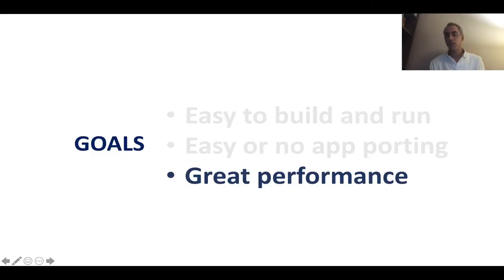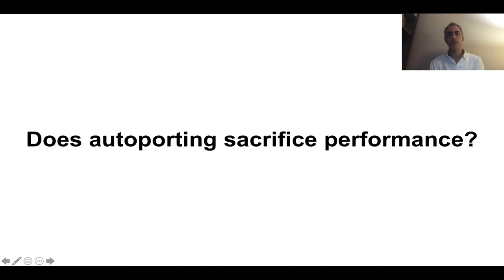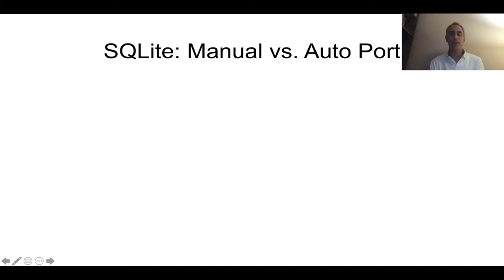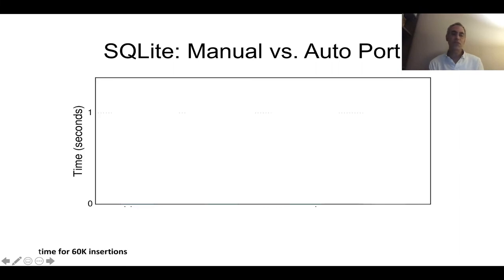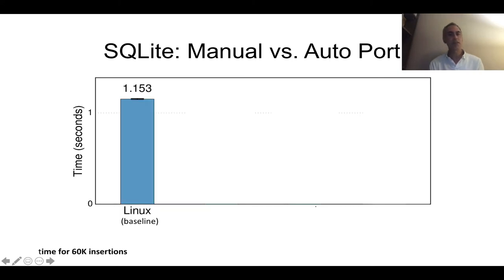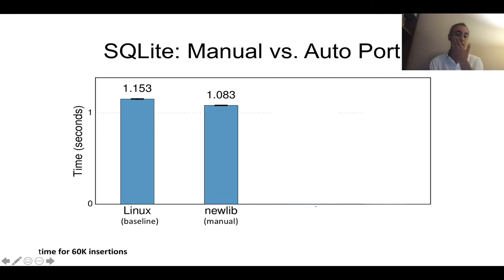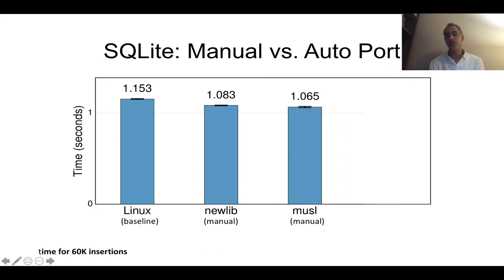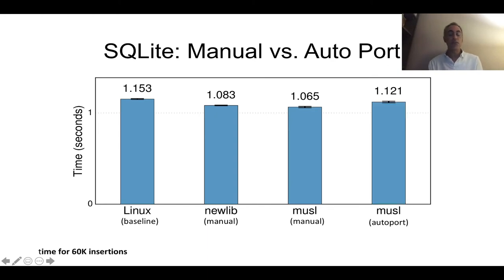Finally, on the last goal, we want to obtain great performance. One of the questions is: does auto-porting sacrifice performance? To answer this question, we compared a manual port that we did of SQLite on Unicraft and compared it to the auto-porting version. We measured the time it takes to do 60,000 insertions. As a baseline, we take Linux, which takes about one second. We compare it against the manual port on Newlib — also about one second, just slightly worse than Linux — and against Musl, also the manual port. The most interesting bar is the auto-porting bar, and you can see that we don't take a hit from auto-porting. So this is good news.